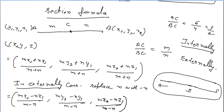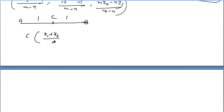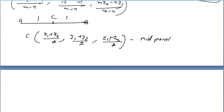One more important case of the section formula is the midpoint. If C is the midpoint of AB, then M equals N equals 1, because both distances are equal and their ratio is 1:1. Substituting into the formula gives the midpoint formula: C = ((x1+x2)/2, (y1+y2)/2, (z1+z2)/2). The midpoint formula is thus derived from the section formula.